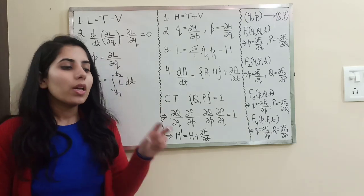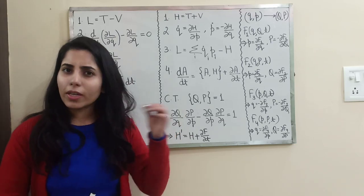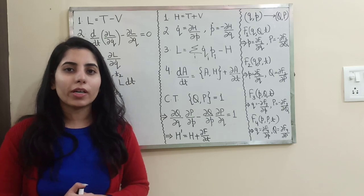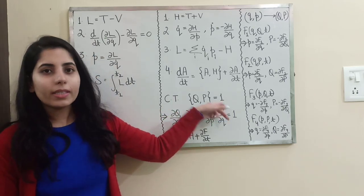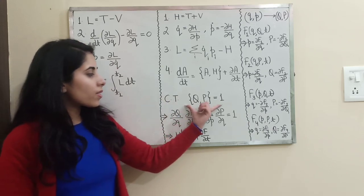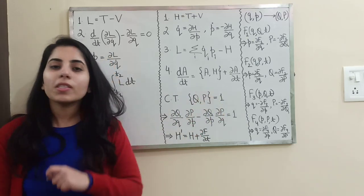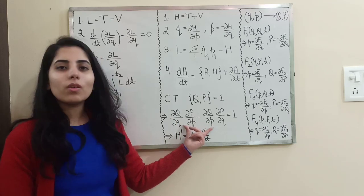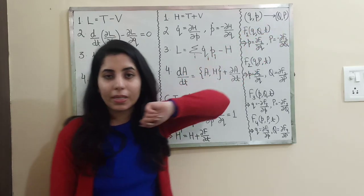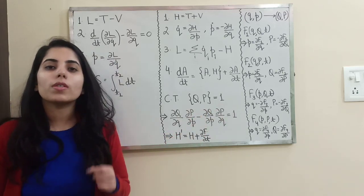For canonical transformation: if you want to check whether a new set of coordinates was obtained through a canonical transformation, you find the Poisson bracket of the new set of coordinates with respect to the old ones. If it equals 1, the transformation is canonical. The old coordinates are small q and small p; the new ones are capital Q and capital P.